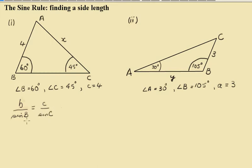Now putting those in, we know that b is x, so x over the Sine of 60 is equal to 4 over the Sine of 45.